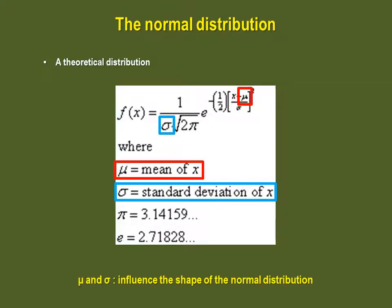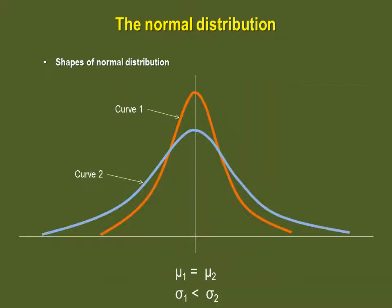These two elements influence the shape and position of any normally distributed variable. If we take a look at this example, both normal distributions have the same mean, but curve one has a lower standard deviation than curve two. Notice how curve two is more spread out and isn't as high as curve one. Standard deviation influences the shape of the curve, not its position.